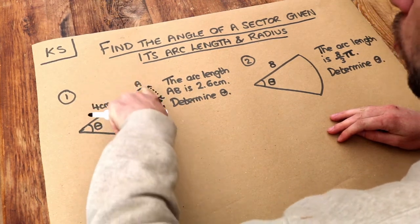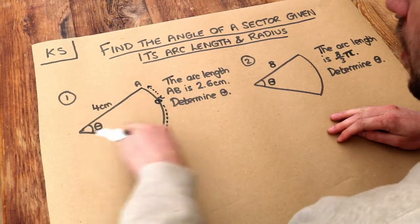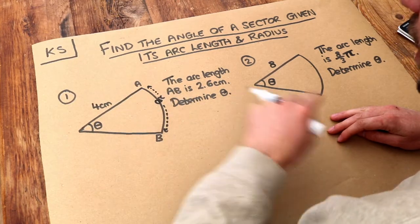So an arc is just a portion of the circumference of a circle. So the sector is the whole area, the arc is just this curve length here.